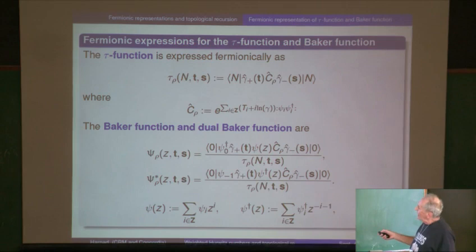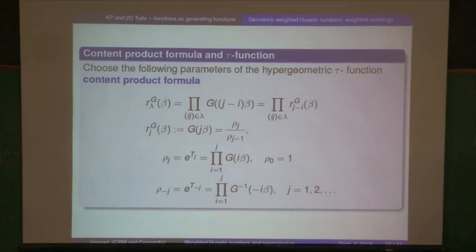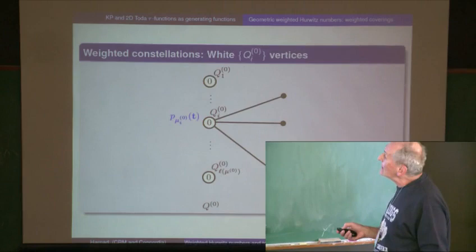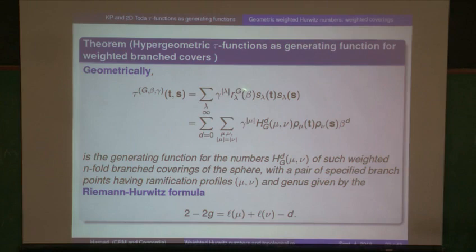These two flow variables don't commute — they form a Heisenberg algebra — but those are the two flow variables, and any 2D Toda tau function is representable fermionically in this way. The particular case which gives the types of tau functions we were looking at is where everything is diagonal in the Schur function expansion — why? Because the group acts diagonally, and it acts diagonally on the Fermi-Fock space: every basis element is an eigenvector, and these are just the eigenvalues of that group element.